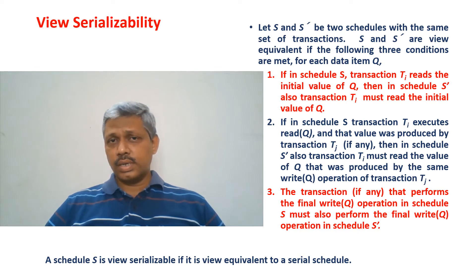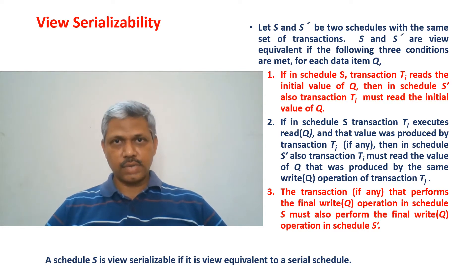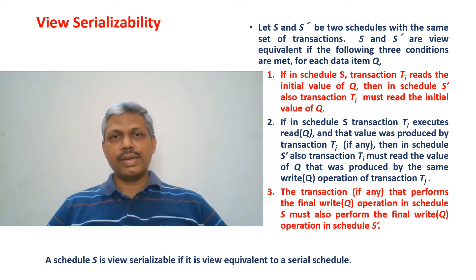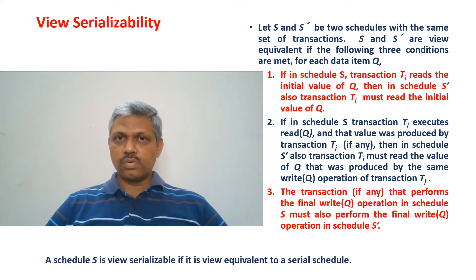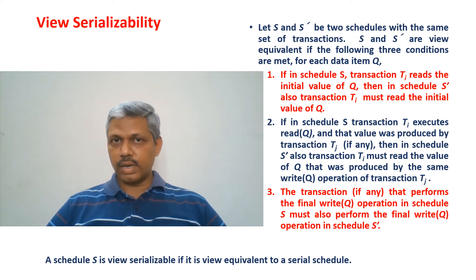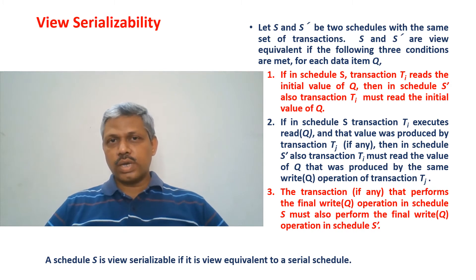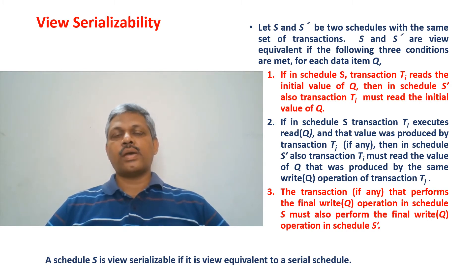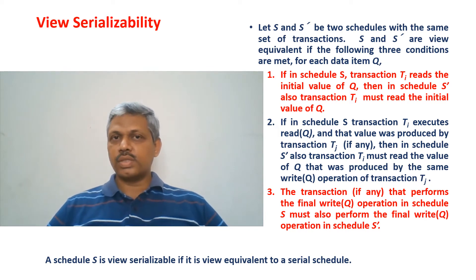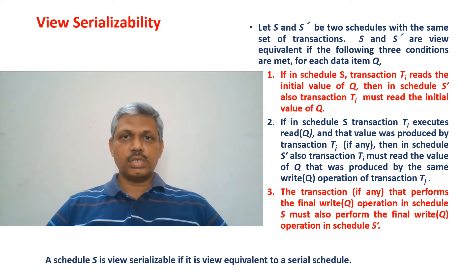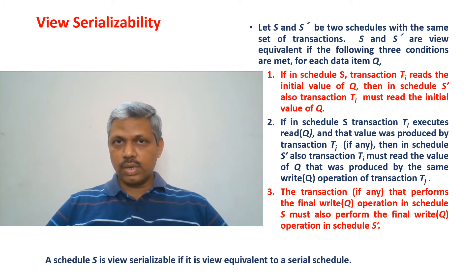Whenever a particular database object is read by a transaction already produced by some other transaction, this should happen in the same order in S'. And finally, for every database object, whichever transaction writes the final value, that same transaction should also write the final value in S'. If all three conditions are satisfied for every database object with respect to all transactions, we call the two schedules view equivalent.